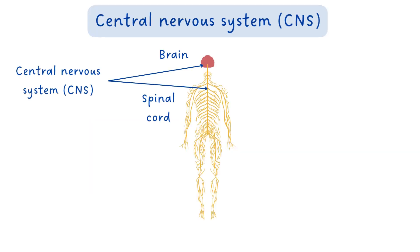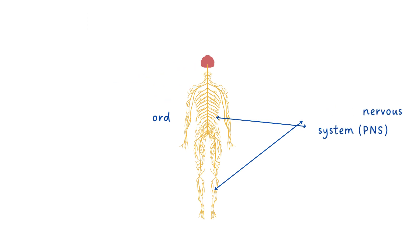The central nervous system is made up of the brain and spinal cord, while the peripheral nervous system is made up of all the other nerves in the body.